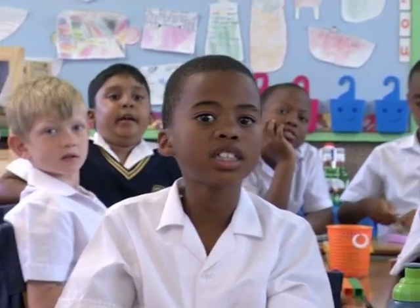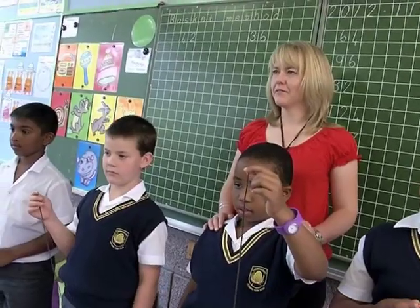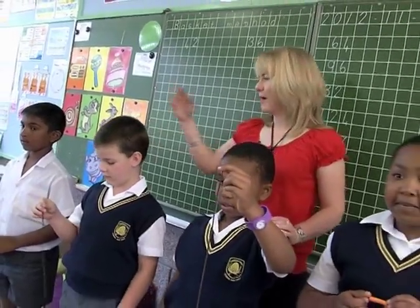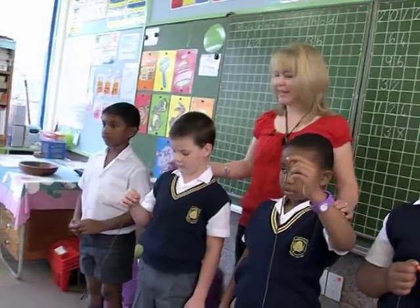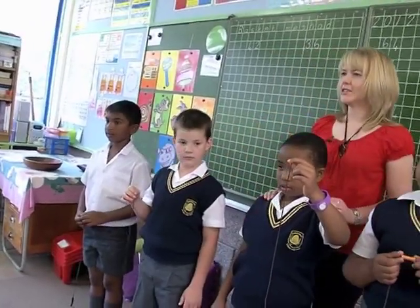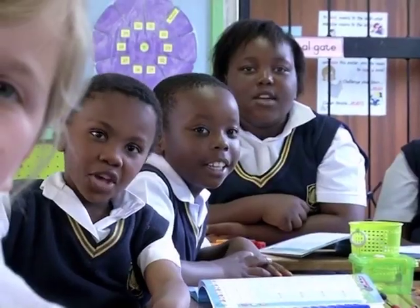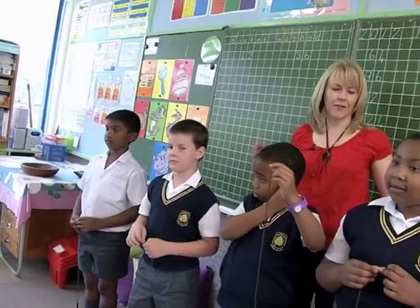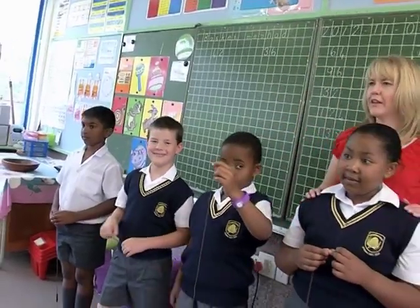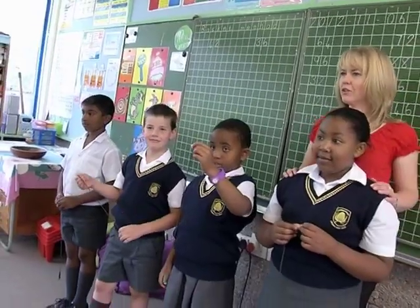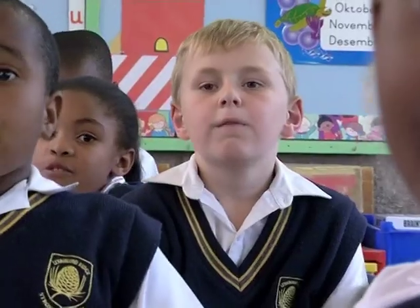How many does Zandile have? 10. If I put Tristan, Keelan and Zandile together I have? 20. And if I put Pearl, how many do I have altogether? 40.